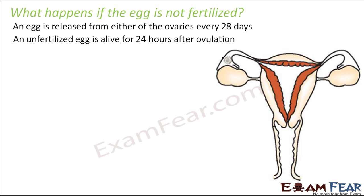This unfertilized egg will remain alive for 24 hours after ovulation. It waited for those 24 hours and no sperm came to fertilize it. During this time, while the egg is waiting, the uterus is also preparing itself to receive the embryo — because the uterus anticipates that every month some embryo might come. It prepares by thickening its lining.